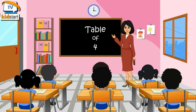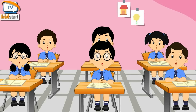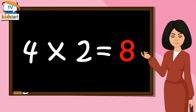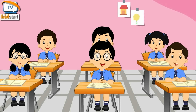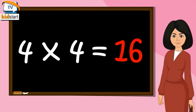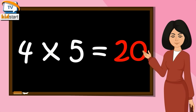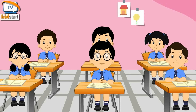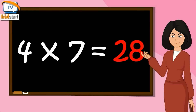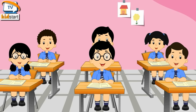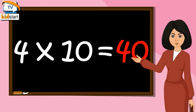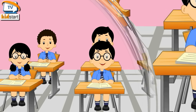Table of 4. 4 times 1 is 4. 4 times 2 is 8. 4 times 3 is 12. 4 times 4 is 16. 4 times 5 is 20. 4 times 6 is 24. 4 times 7 is 28. 4 times 8 is 32. 4 times 9 is 36. 4 times 10 is 40.